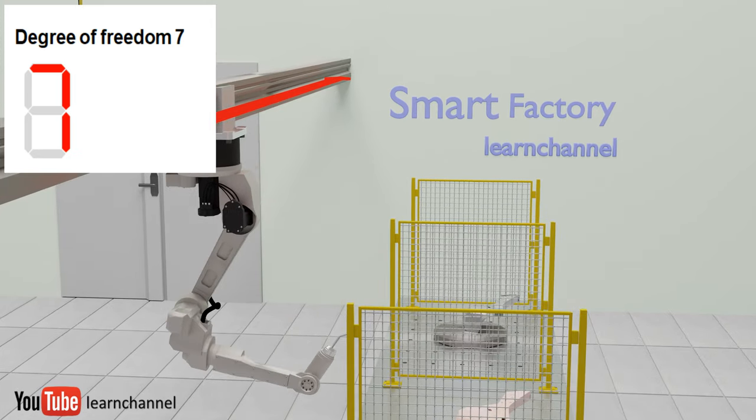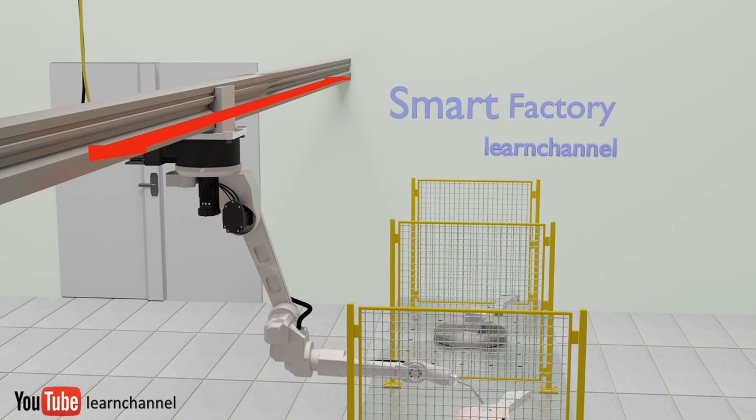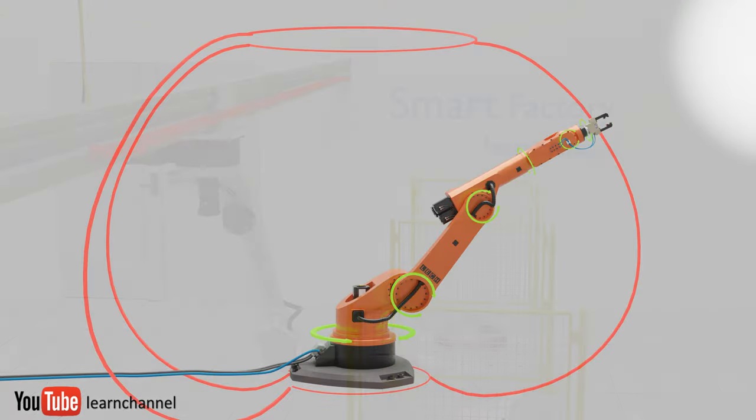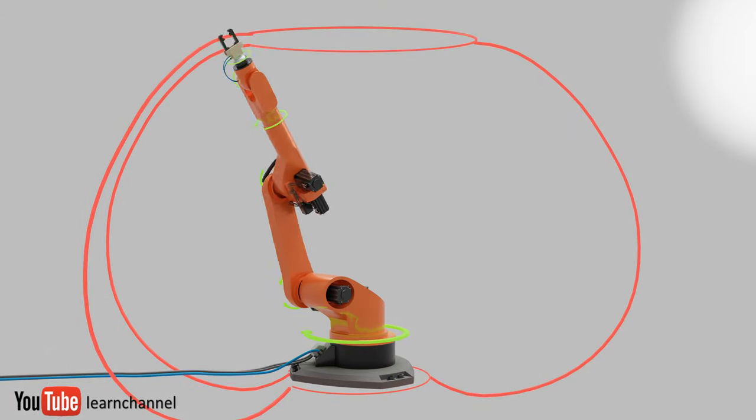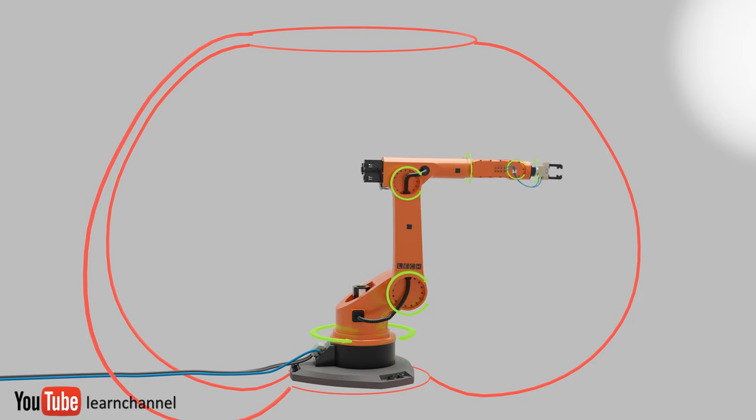This rail can be on the floor, but often it is mounted on the ceiling. The workspace results from the kinematic structure of the robot and can be described as spherical.